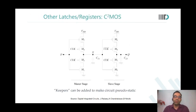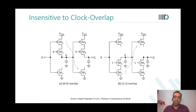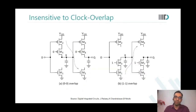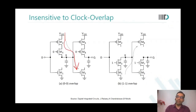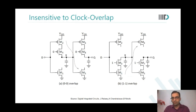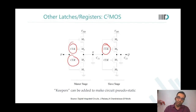In C2MOS design, both phases of the clock — clk and clk bar — exist. At any given point in time, even if one side goes active, the other side will not drive. So even in the case of a zero-zero overlap or a one-one overlap, even in the case of clock overlaps, the design is safe.